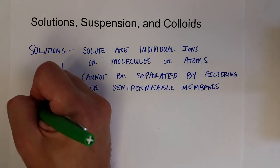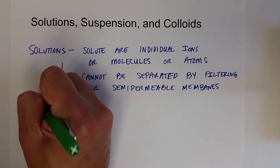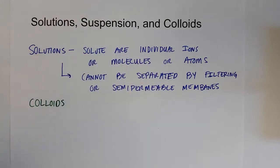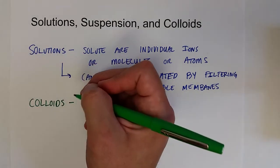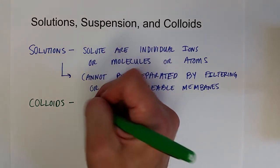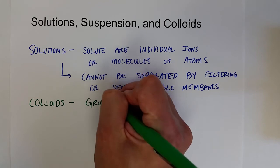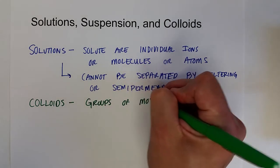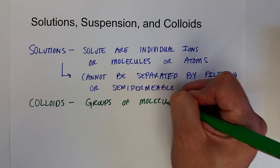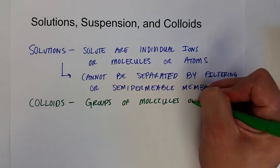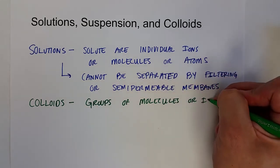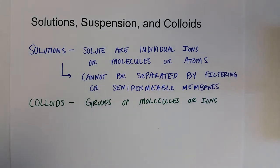The next one we'll talk about are colloids, because we're thinking about size scale. The particles in colloids are groups of molecules or ions that are aggregated together or pulled together by some type of bonding or intermolecular forces, more likely.